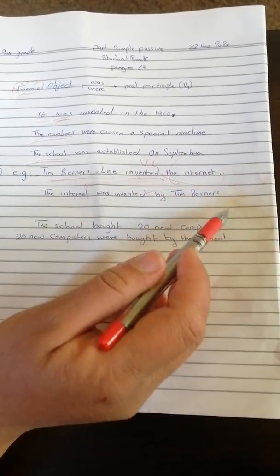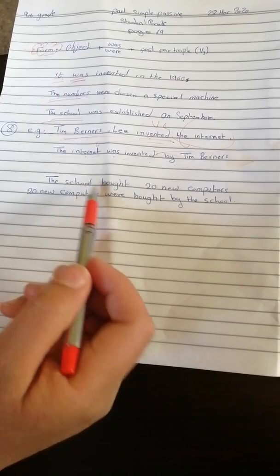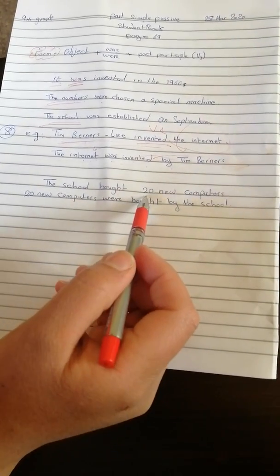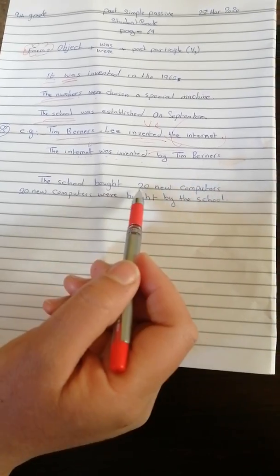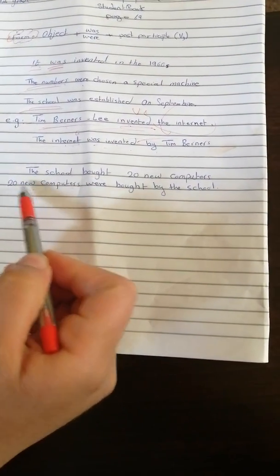The school bought 20 new computers. Now where is the object? 20 new computers. You have to put it at the beginning.